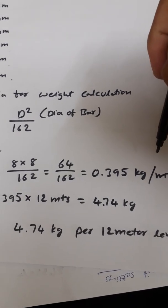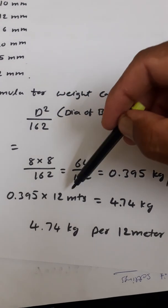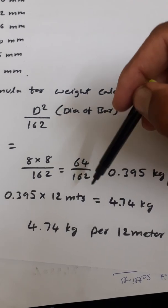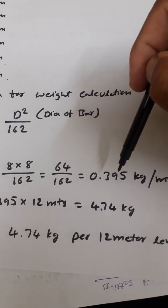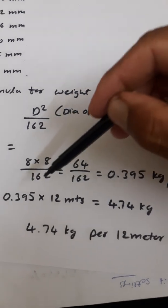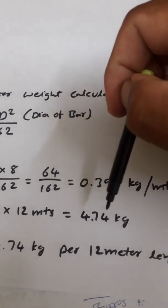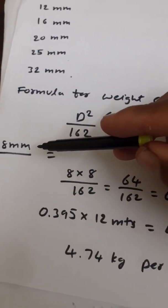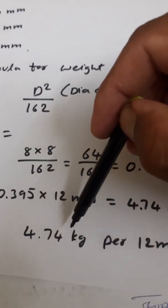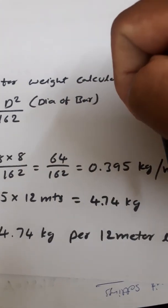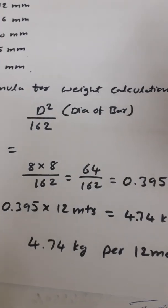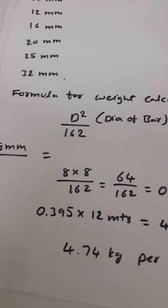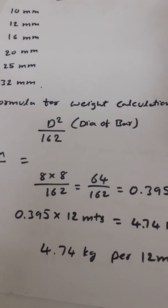The standard length of the bar in the market is 12 meters. So we multiply 0.395 kg by 12 meters to get 4.74 kg. Each 8mm bar weighs 4.74 kg for a full 12-meter bar. We then multiply the number of 8mm bars we need to buy by 4.74 kg to get the total weight.